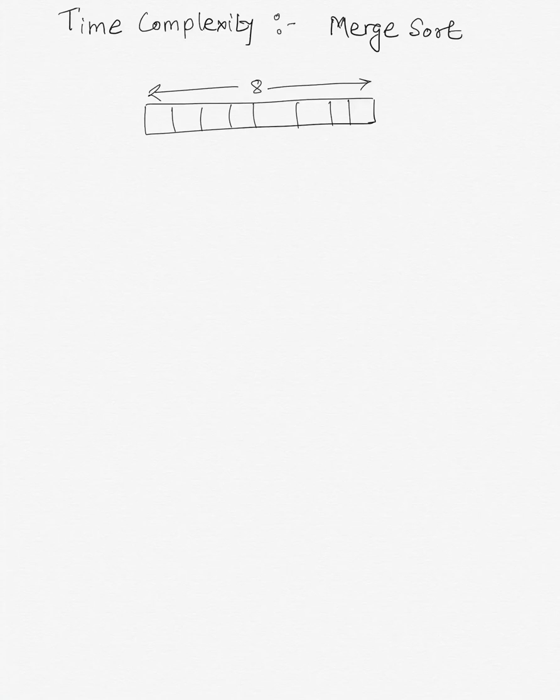In this video I'm going to talk about the time complexity of the merge sort algorithm. We know that the time complexity of merge sort is O(n log n). I'm not going to go into the details of the recurrence relation, but I'm going to talk about a high-level or general idea behind why the time complexity is n log n. Let's say we have an input array of length 8.